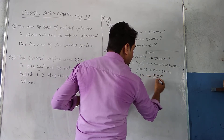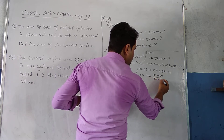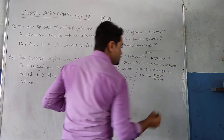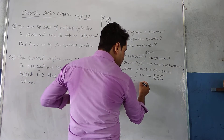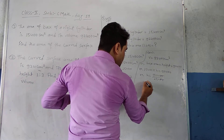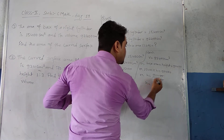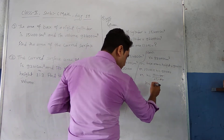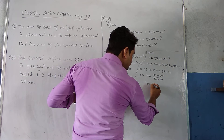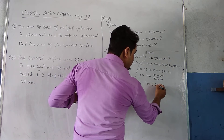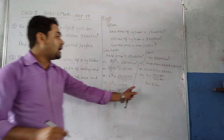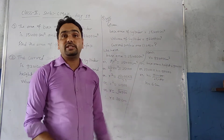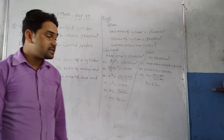Therefore h = 92400 ÷ 15400. Cancelling two zeros from both sides, we get h = 6. Therefore height = 6 centimeters.